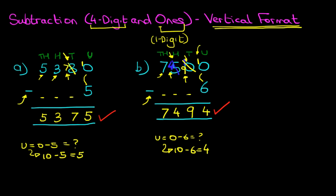It looks a little bit messy the way we've worked through this, but this is the correct and the best method. And with a bit of practice, you'll be able to do this very quickly. We're going to work on one which is even more tricky. This time we've got the number 2,000 minus 8.